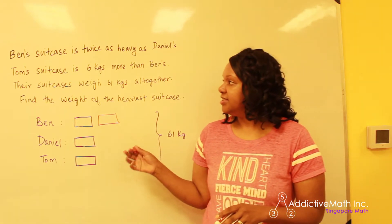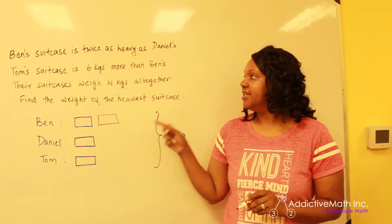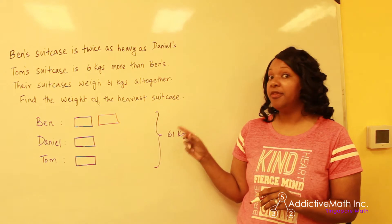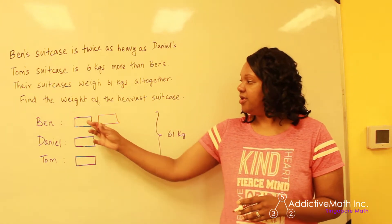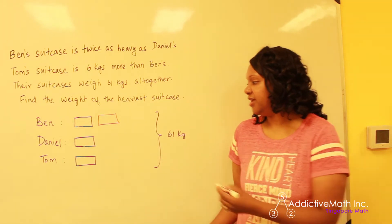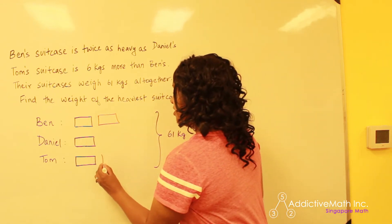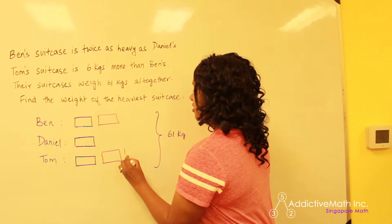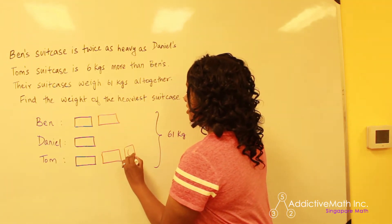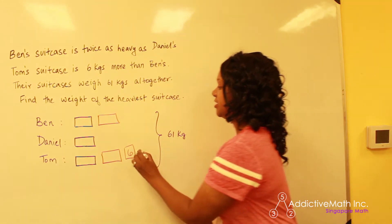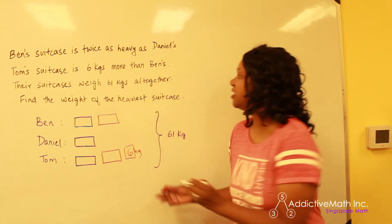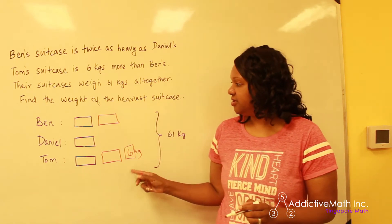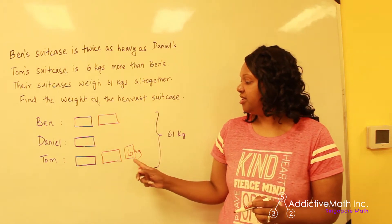The next sentence, Tom's suitcase is six kilograms more than Ben's. So right now we know Ben's suitcase. He has two bars for his suitcase. So Tom will also need two suitcases for him. And we need to add another little part because his is six kg more than Ben's. So we have the same one as Ben, but another six.